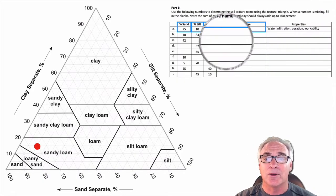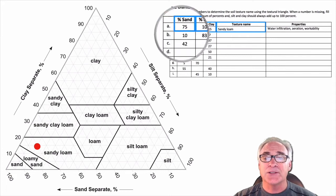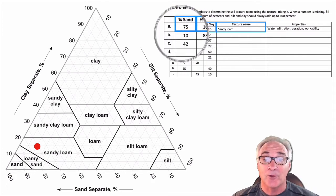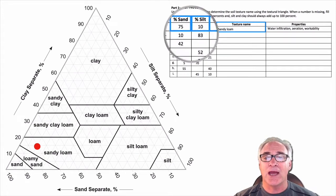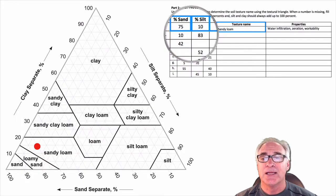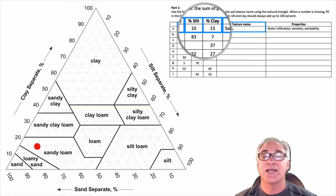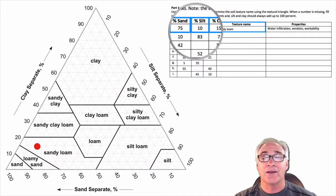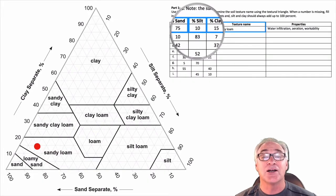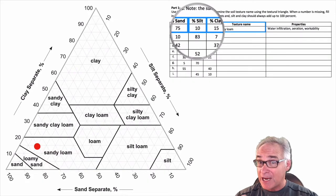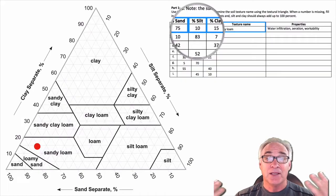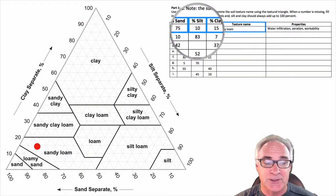Let's try one more. Sample B has 10% sand, 83% silt, and 7% clay. We add all of those up and of course it's 100%: 10 plus 83 is 93, plus 7 is 100%.